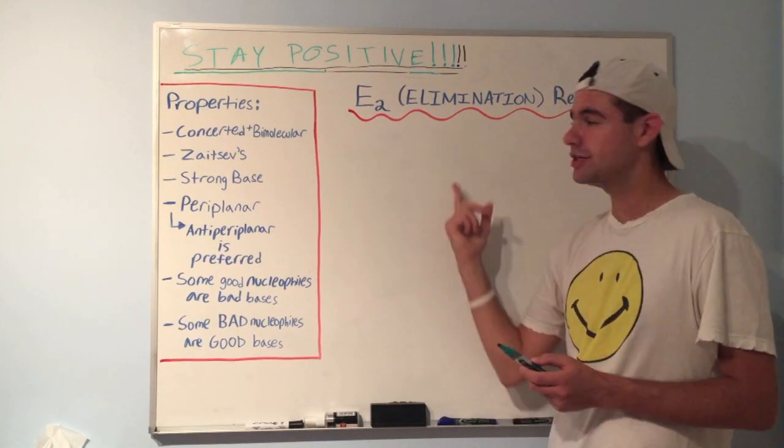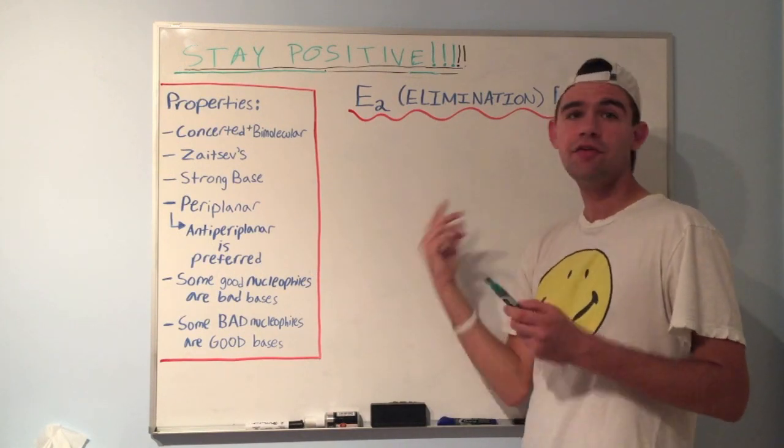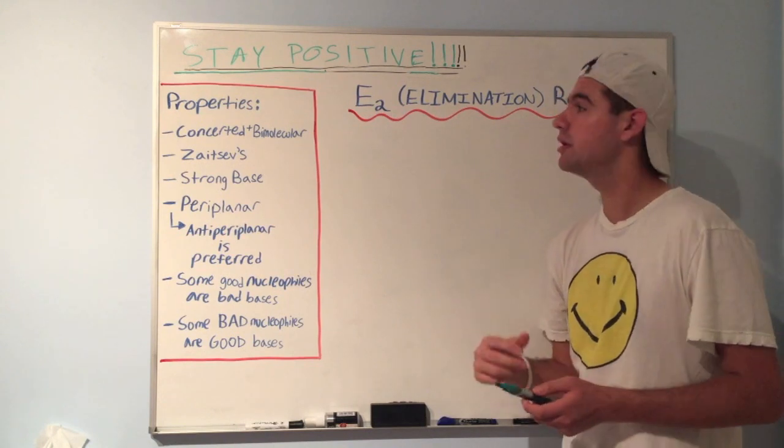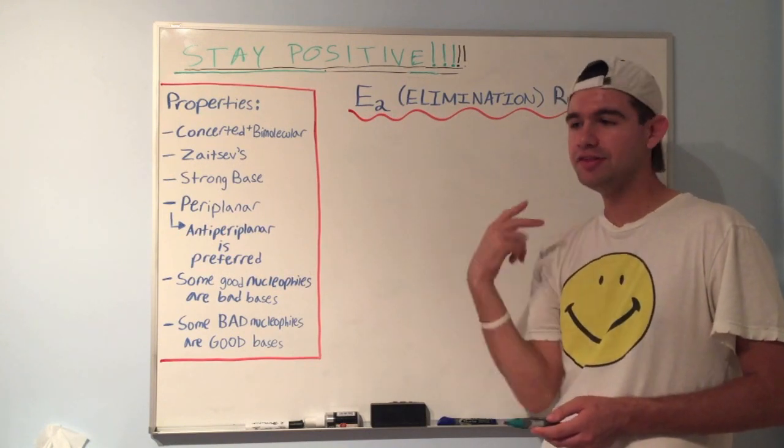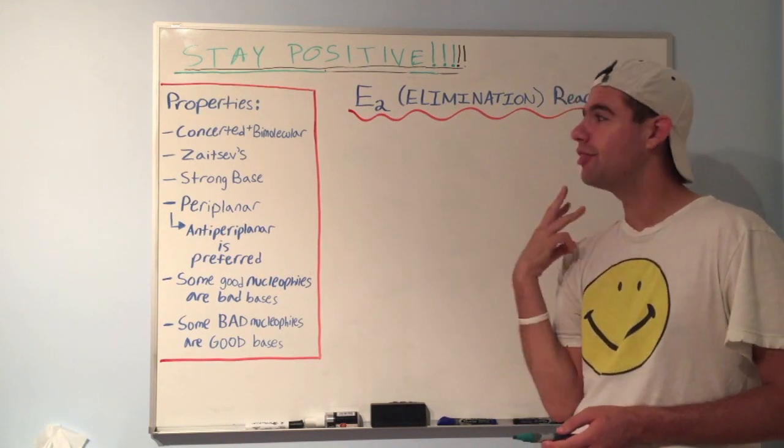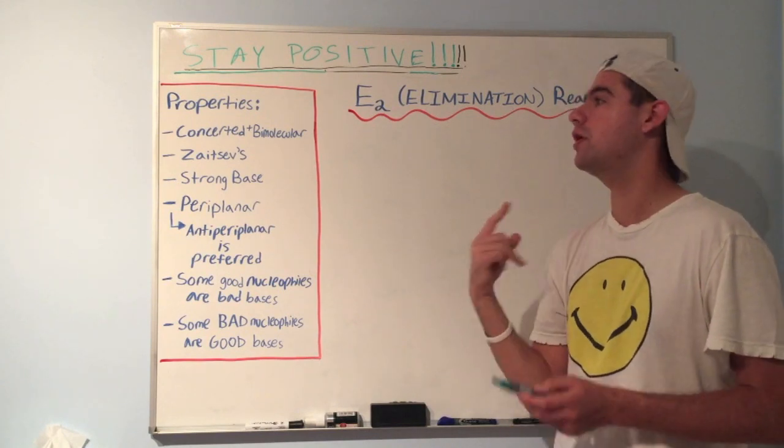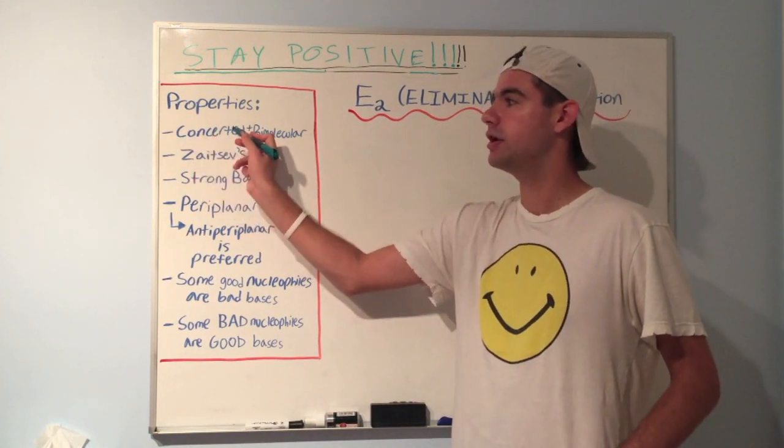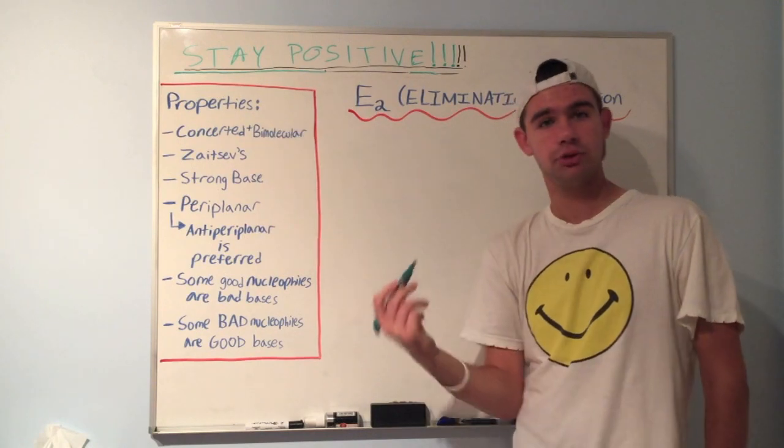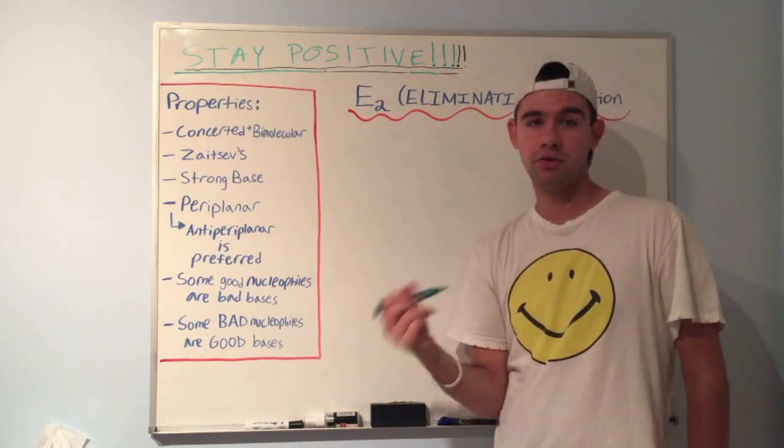One thing I hope you noticed when I did that mechanism is that everything happened at once, in one step. The leaving group left, the deprotonation of the hydrogen, and the formation of the carbon-carbon pi bond were all one step. And that's what we mean when we say that it's concerted. E2 is concerted, just like SN2 is concerted. Everything happens in one step.